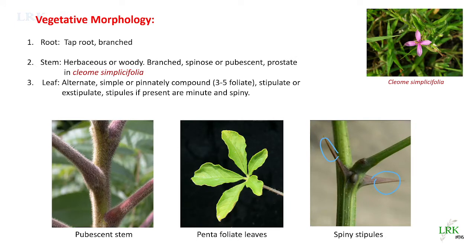Now we will see vegetative morphology. The root system is a tap root system — it is branched and extends deep into the soil, as is characteristic of all dicots. When it comes to the stem, the stem is aerial and usually erect. In some, the stem is prostrate — for example, Cleome simplicifolia creeps on the substratum.